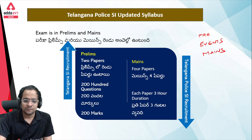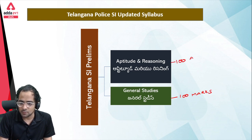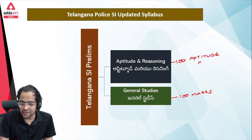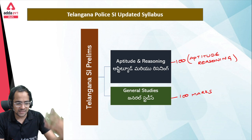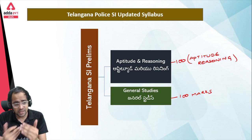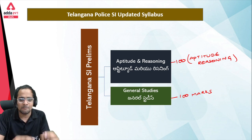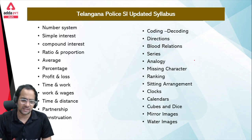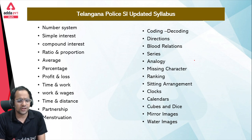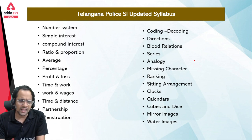One paper is GS and one paper is Aptitude Reasoning. In Prelims, one mark is GS and one mark is Aptitude Reasoning. This Aptitude Reasoning section is separate. In the main paper, Paper 3 and Paper 4, aptitude reasoning and syllabus topics include number system, simple interest, ratio and proportion, general questions, and single-line questions.